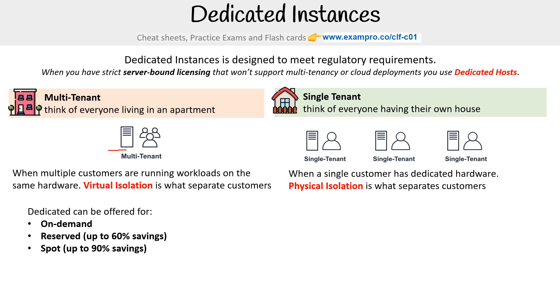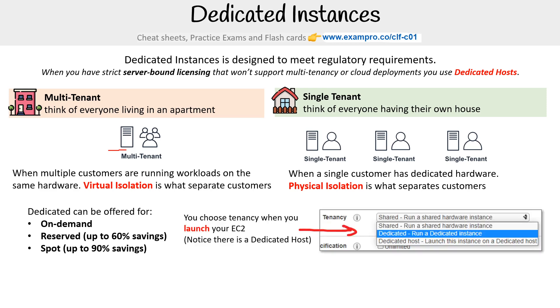When you want to choose dedicated, you just launch your EC2 instance. There's a dropdown where you have shared as the default, dedicated instance, and dedicated host.